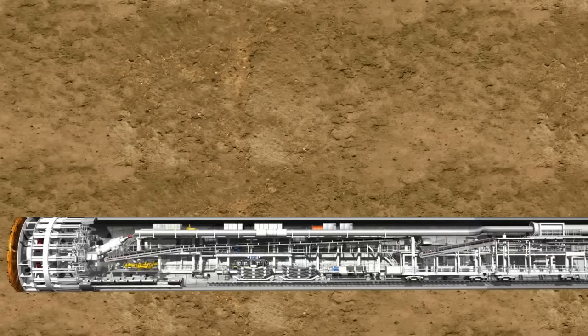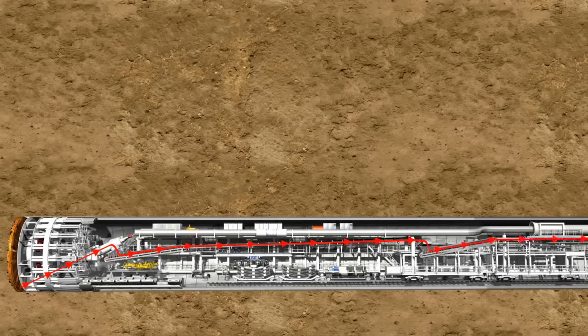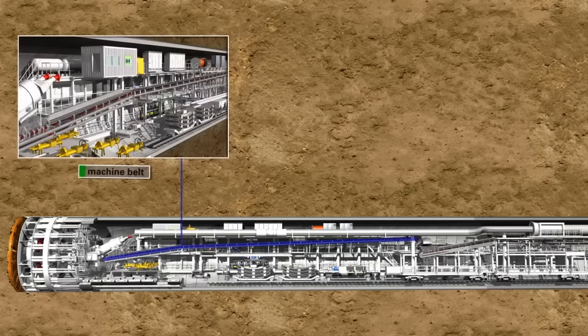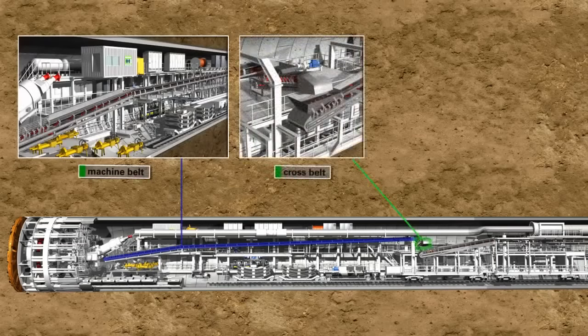In the case of EPB machines, the excavated material is mostly removed by belt conveyors. The core components of such systems are the machine belt, the cross belt, and the tunnel belt, which can measure up to 30 kilometers.